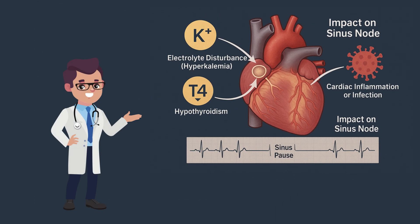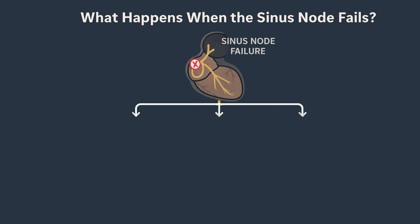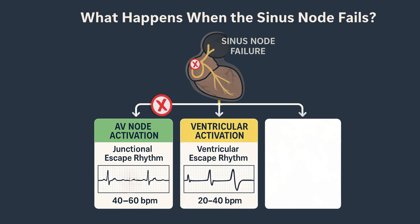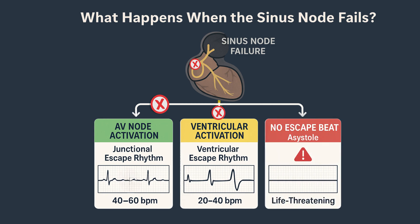So what happens to the heart during that pause? If the sinus node fails and no impulse is generated, the heart must rely on a backup called an escape rhythm. The most common is a junctional escape rhythm coming from the AV node — these beats are slower, around 40 to 60 beats per minute, but enough to keep blood flowing. If the AV node fails too, the ventricles may generate a ventricular escape rhythm, even slower, around 20 to 40 beats per minute. But if no escape beat occurs at all, the result is asystole — a flatline. That is when sinus arrest becomes life-threatening.